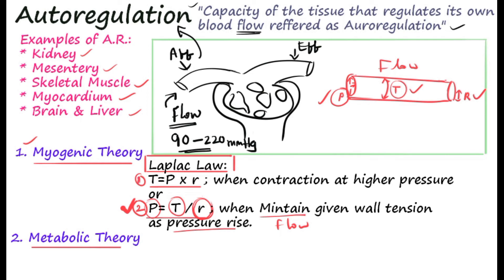The first form of Laplace law states that wall tension T is proportionate to pressure times radius. When the blood vessel contracts due to sympathetic stimulation, this is an example of the first form of Laplace law. So the second form of Laplace law is applicable in the autoregulatory mechanism, and the first form is applicable in generalized sympathetic stimulation.